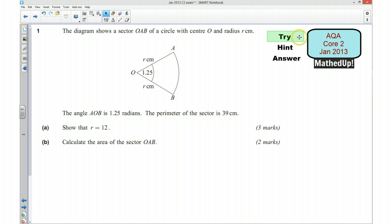Okay, if you're unsure we're now going to go through a hint for the question. Now we're given this diagram and we're told that the angle in this sector is 1.25 radians, and we're also told the perimeter, the distance around the sector, is 39 cm, so that's this distance all the way around here.